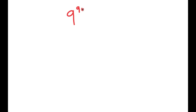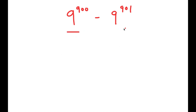In this video I'm going to be solving the problem 9 to the power of 900 minus 9 to the power of 901. To solve this, I'm going to start by evaluating my terms. We have 9 to the power of 900 and 9 to the power of 901, and these two terms are pretty similar except that the exponent for 9 to the power of 900 is one less than the exponent for 9 to the power of 901.